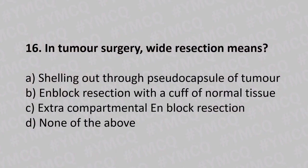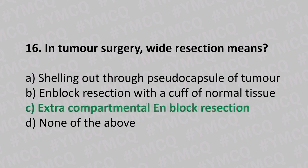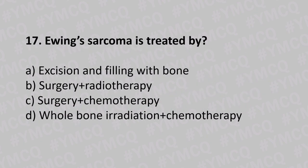Question on tumor surgery: wide resection means option A shelling out through the pseudo-capsule of the tumor, option B en bloc resection with cuff of normal tissue, option C extra-compartmental en bloc resection, option D none of the above. The answer is option C, extra-compartmental en bloc resection.